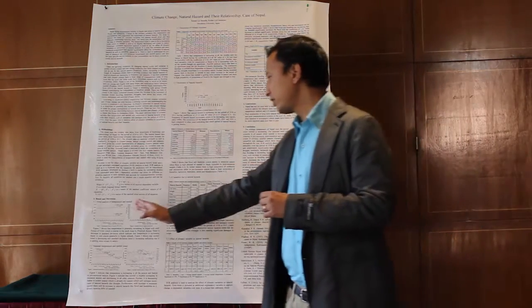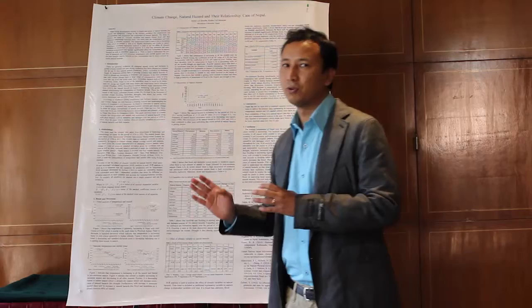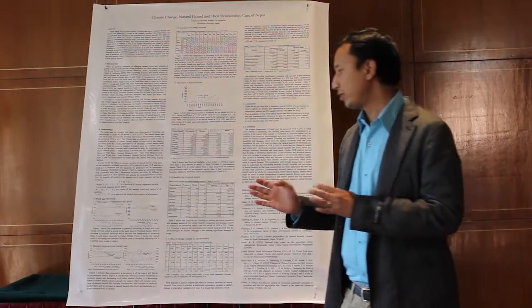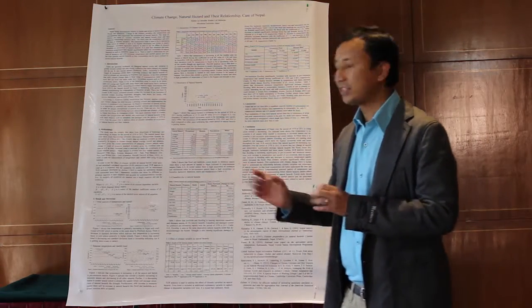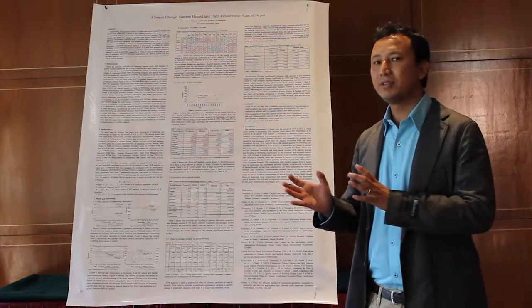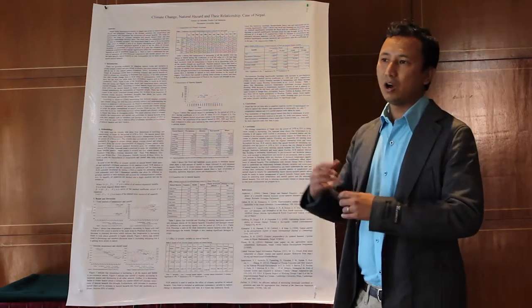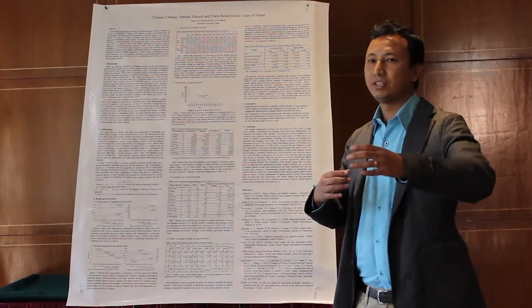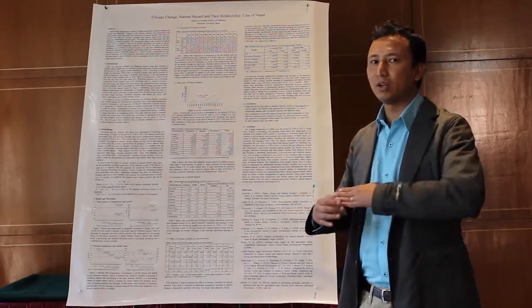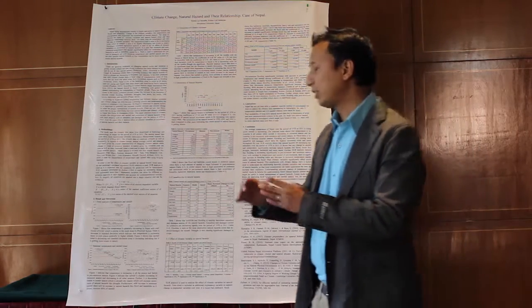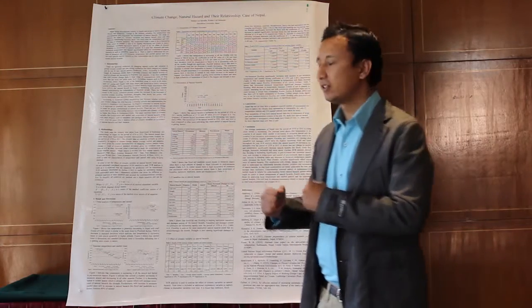It shows that temperature is increasing by 0.04 degrees centigrade for each year, and I used the standard deviations of each year to show how the temperature is changing in the higher parts and in the lower parts. When you see that trend, it shows the time series.